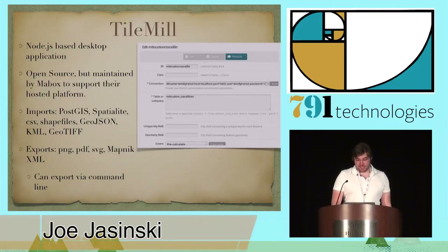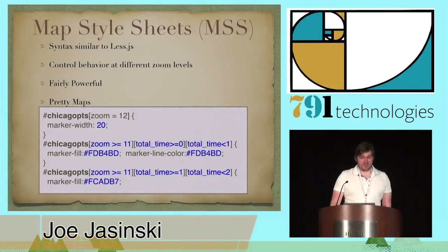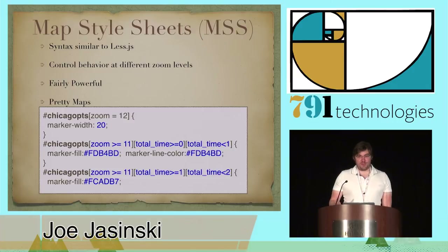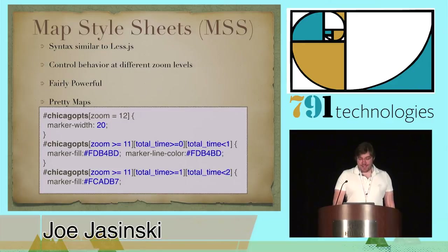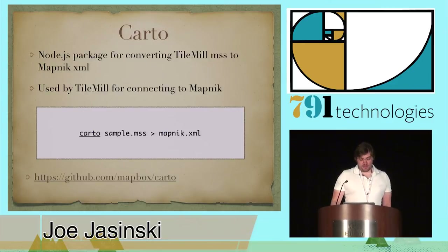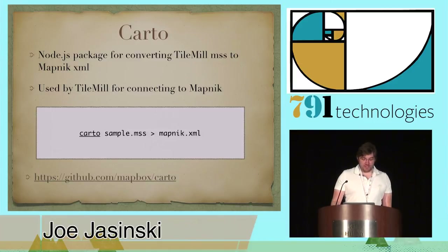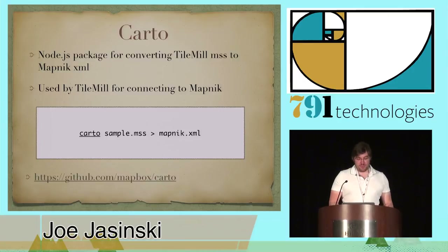The reason I like TileMill is its MapStylesheets — a markup language similar to CSS, or most similar to Less.js. You can change how your maps look in a very intuitive fashion at different zoom levels. On the back end, TileMill uses a Node.js library called Carto, which converts MapStylesheets to Mapnik XML. You can also call Carto from the command line to do this translation yourself, so you don't even have to use TileMill if you don't want to.